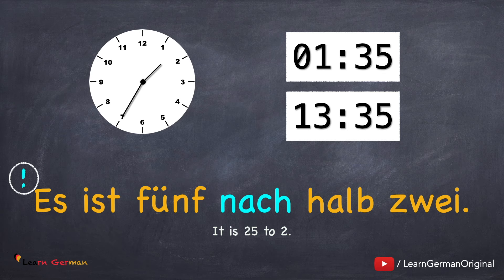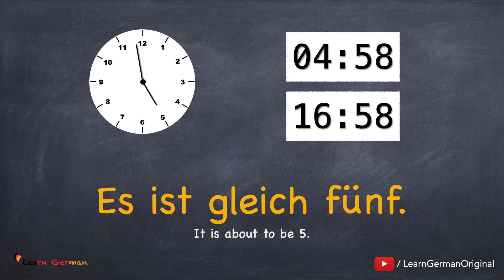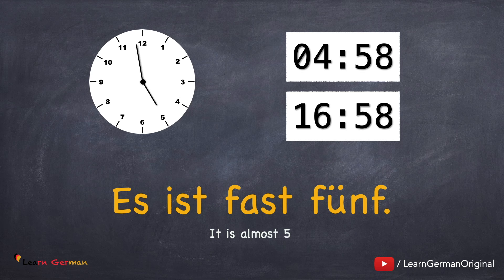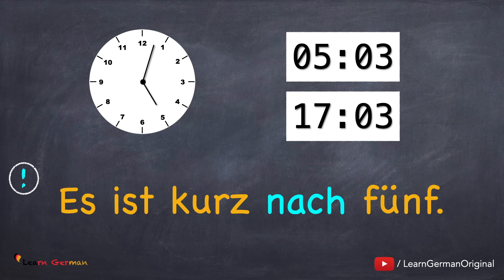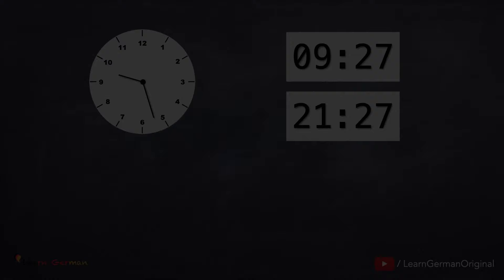Let's do some other special cases. Es ist kurz vor fünf. Kurz can be used whenever it's one, two, three, four, or five minutes before or after an hour. For the same thing you can also say Es ist gleich fünf. Another variation is Es ist fast fünf. These last three structures are used when it's about to be a complete hour. In the other case you would say Es ist kurz nach fünf. Es ist kurz vor halb zehn. And here you would say Es ist kurz nach halb zehn.